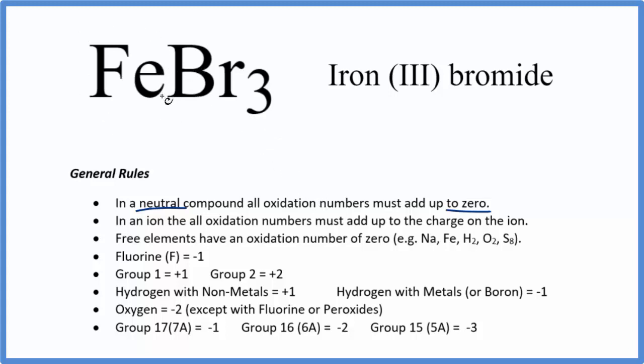Iron, we do not know the oxidation number for that. Iron is a transition metal. Sometimes it's plus 2, sometimes it's plus 3.